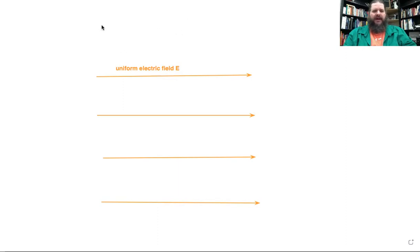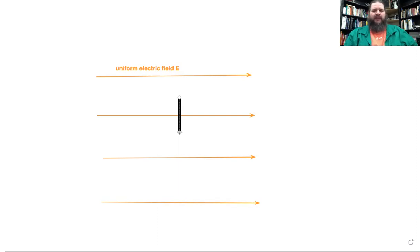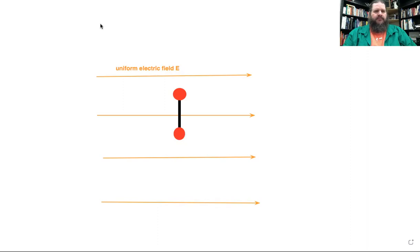Let's say we have an electric dipole — what do we mean by a dipole? What is an electric dipole? It can be any object that has a positive end and a negative end. The simplest case would be a positively charged object and a negatively charged object connected to each other by something — maybe a molecular bond, maybe a plastic rod.